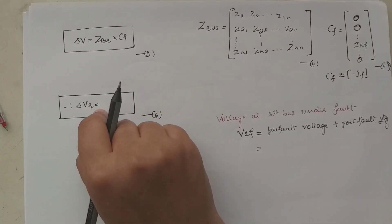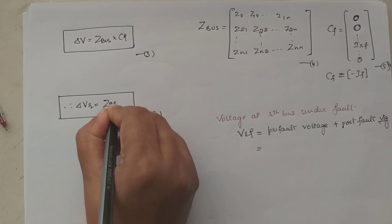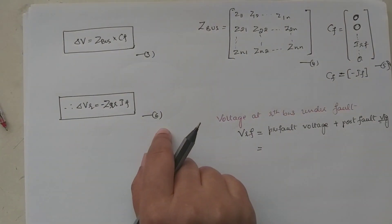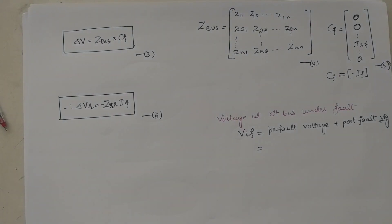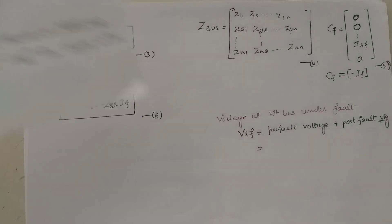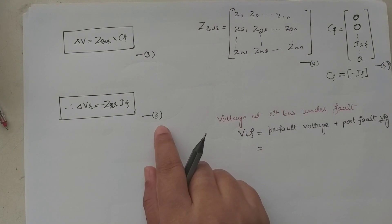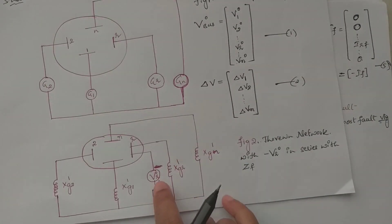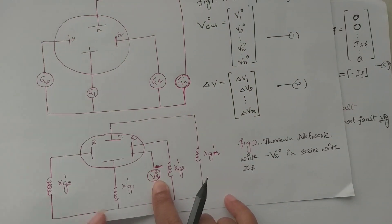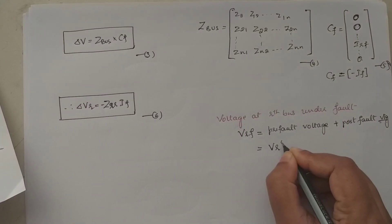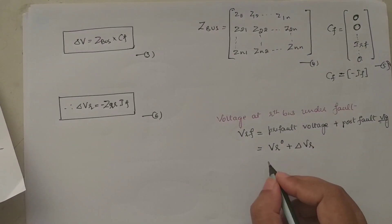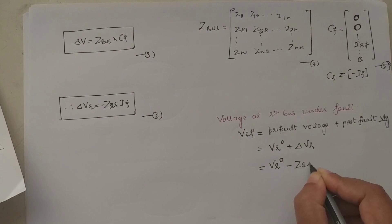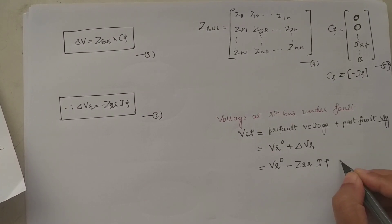Comparing the equations, ΔVr equals Zrr × CF. Since CF equals −If, we get ΔVr = −Zrr × If — take this as Equation 6. From Equations 1 and 6, the voltage at the r-th bus under fault equals pre-fault voltage plus post-fault voltage change: Vrf = Vr⁰ + ΔVr = Vr⁰ − Zrr × If — take this as Equation 7.